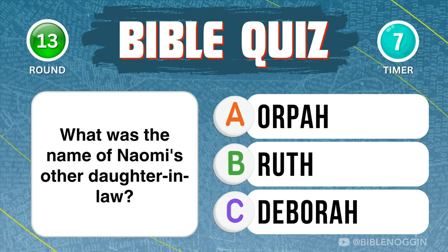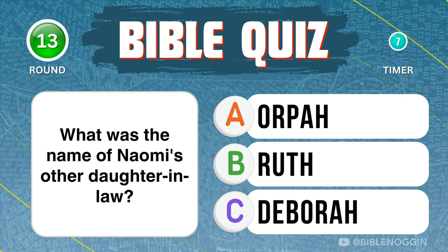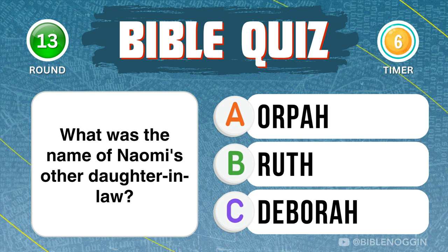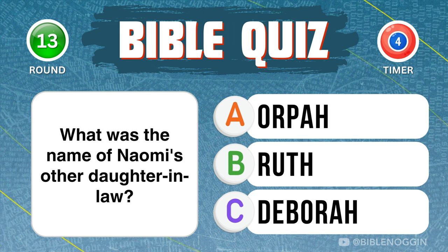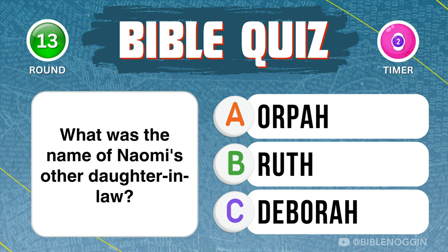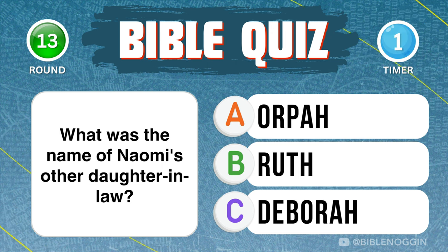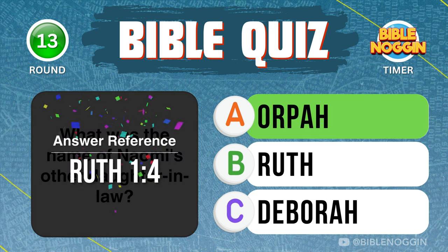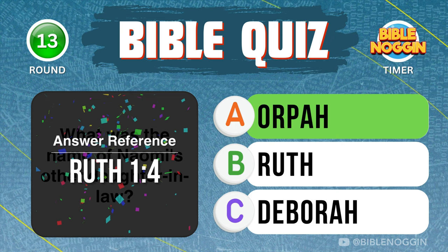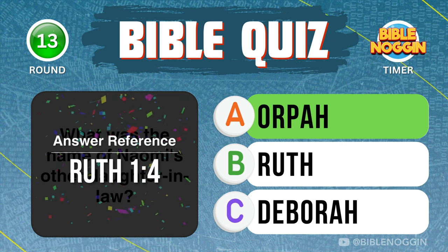Question 13: What was the name of Naomi's other daughter-in-law? Orpah — found in Ruth chapter 1, verse 4.